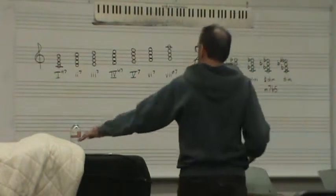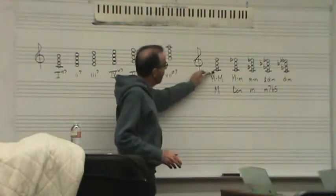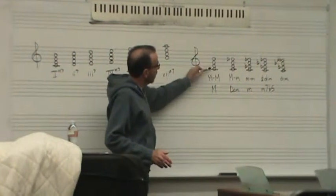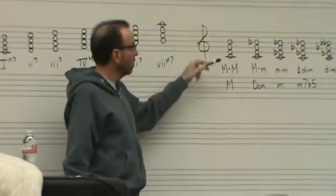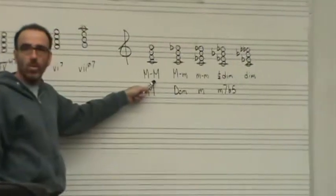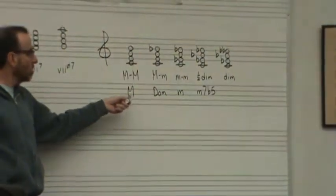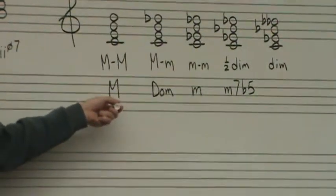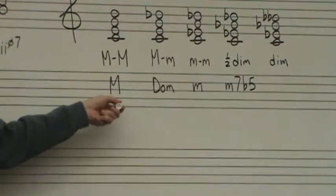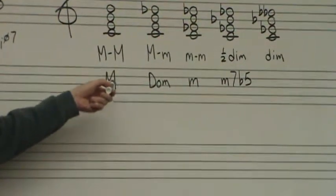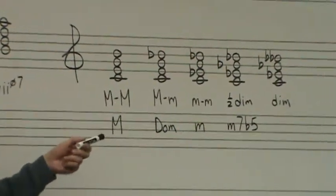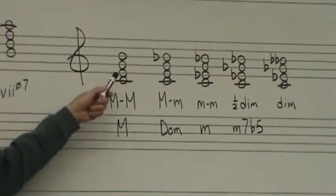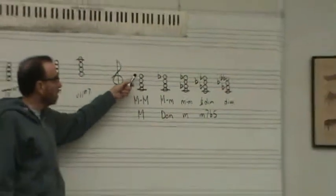If you take a major triad and a major seventh — so from the root to the seventh, the major seventh — we call that a major-major seventh chord, or more often than not, just called a major seventh chord. It's only when you really need to get specific that you say major-major. Otherwise you can just say major seventh chord. That's a major triad with a major seventh.